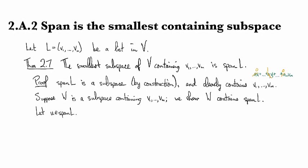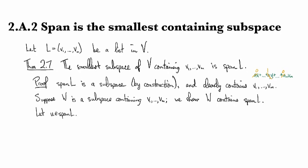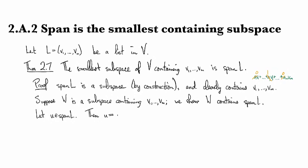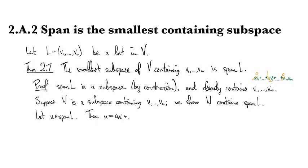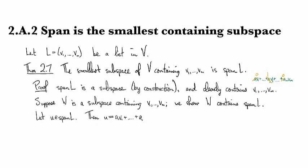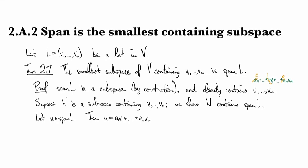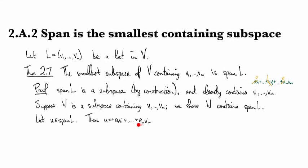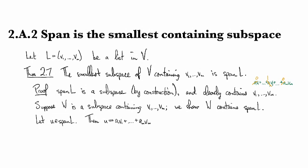Now I can use the definition of the span to say that U has to look like a1V1 plus dot-dot-dot up to amVm, because that's what the span is—it's the collection of all objects of this form here.